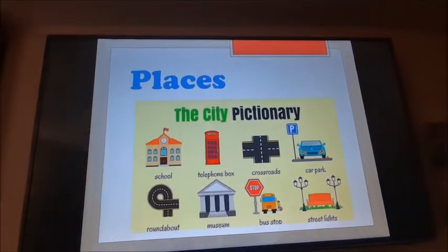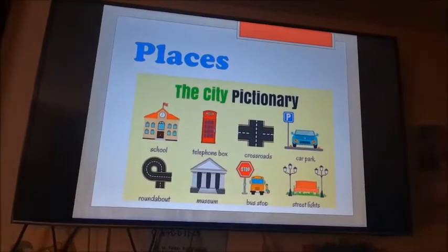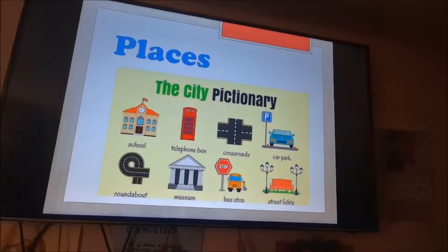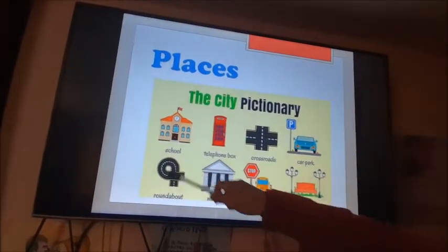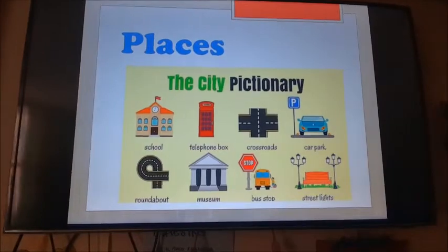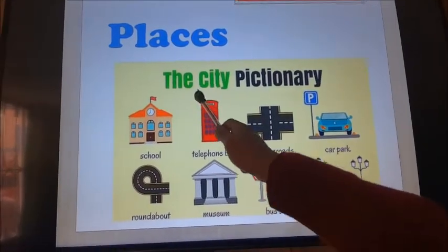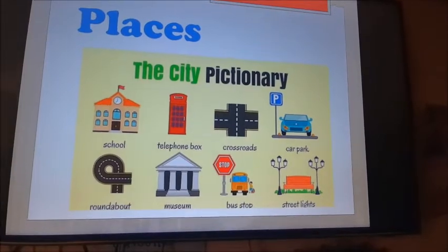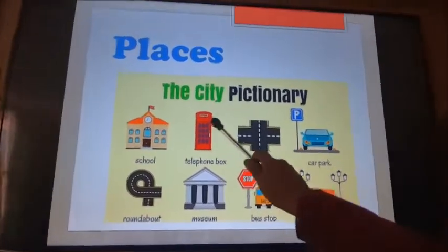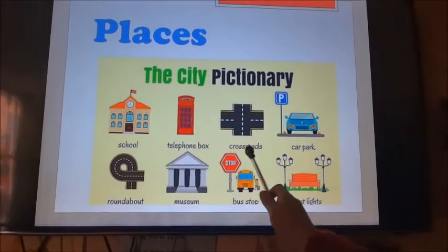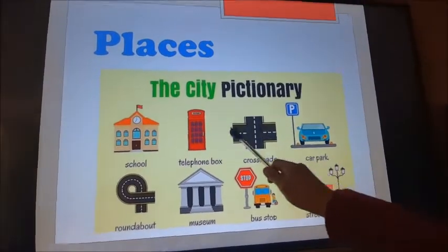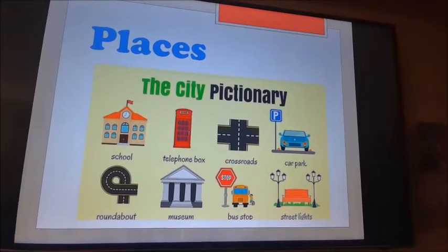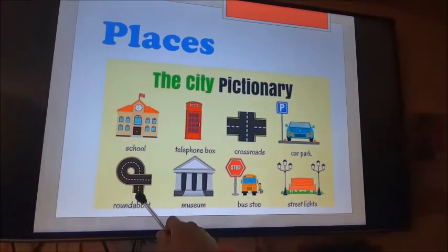But before we start with our lesson, we have to learn something about places — it is really useful because you will use this vocabulary. First: 'school' — escuela. Next, the 'telephone box' — a cabina telefónica, really common in Europe. 'Crossroads' — when two roads cross — un cruce de avenidas. 'Car park' — un parqueadero de carros. 'Roundabout' — un giro en círculo.